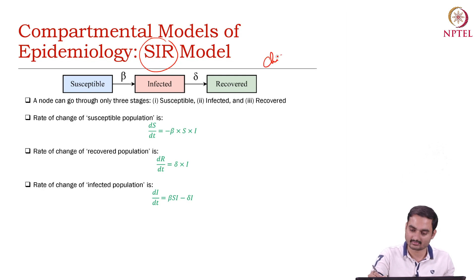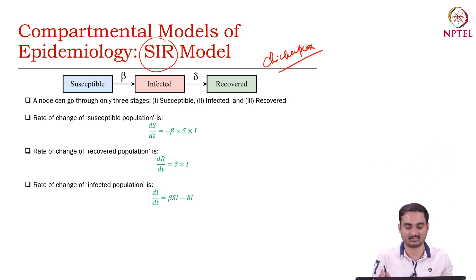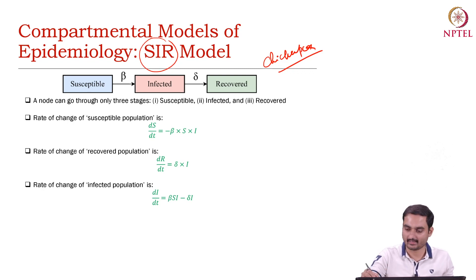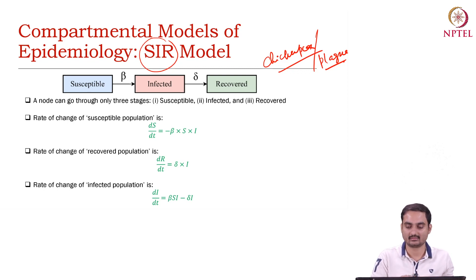This is like a chicken pox kind of disease — if you get infected by chicken pox, you will not be infected by it in the near future. Or say plague. Now we will see the rate of change of the susceptible population, infected population, and recovered population.